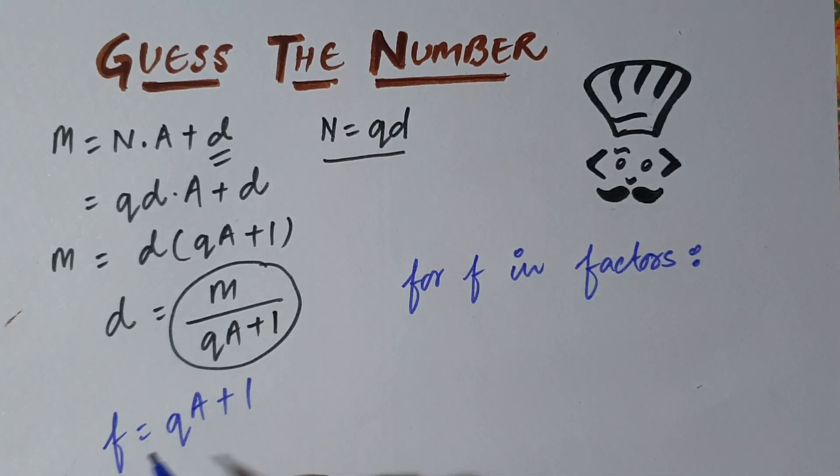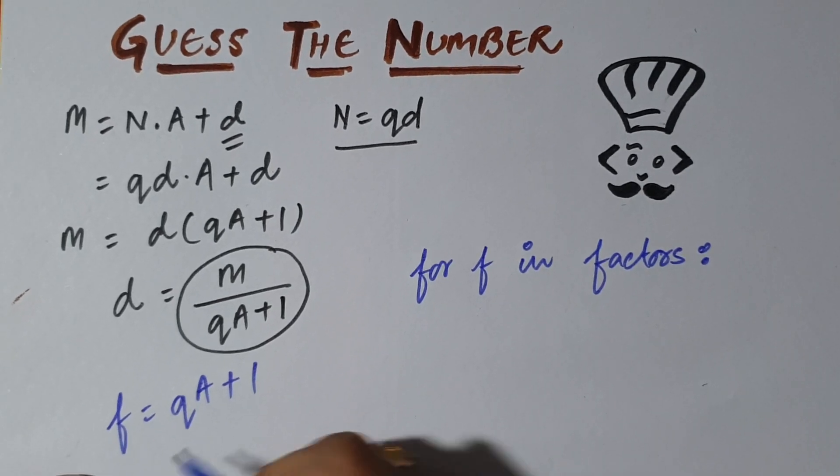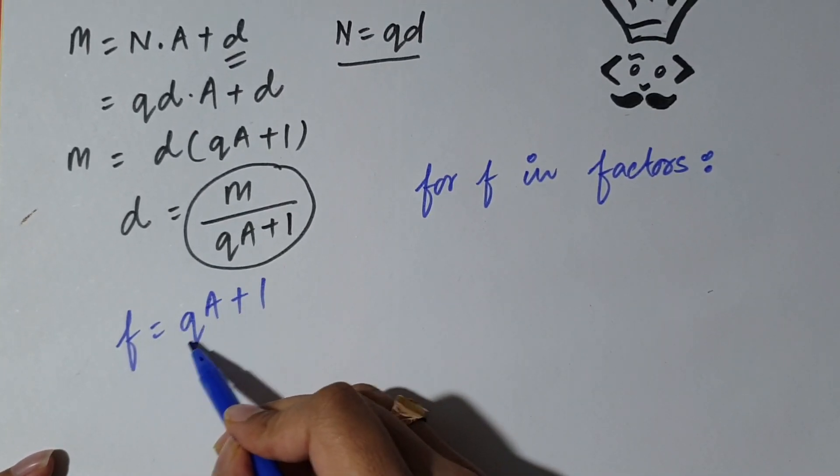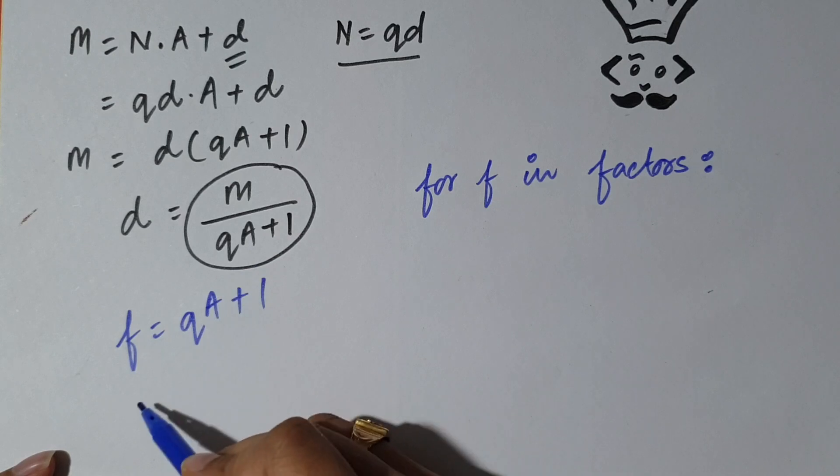So now we need to see what all F's do we actually need. We will not be taking all these F's into consideration. What F's will be taken into consideration is F equal to QA plus 1. This is what is the factors.